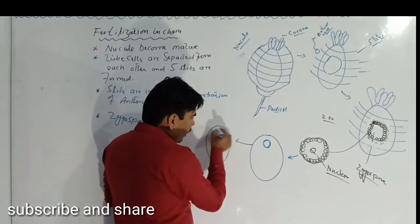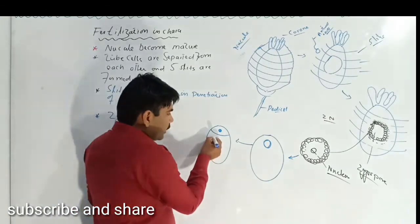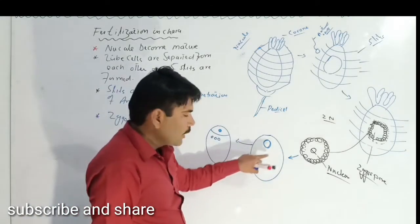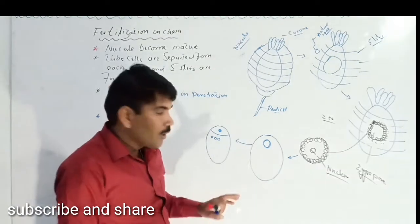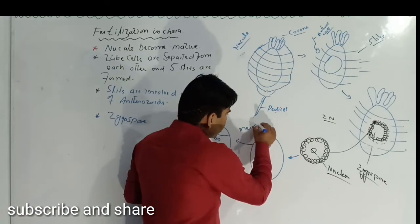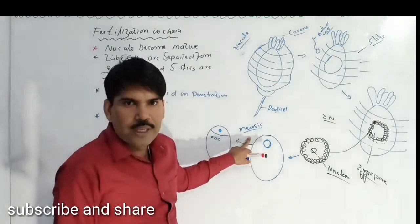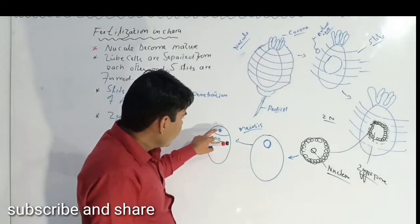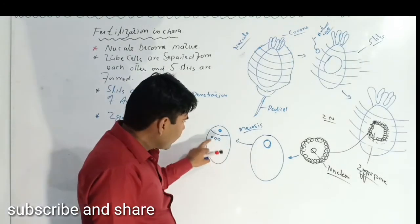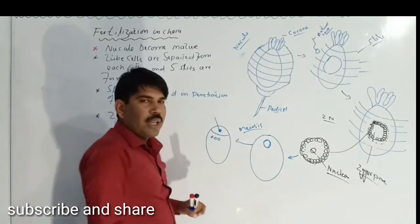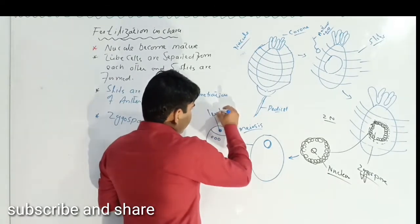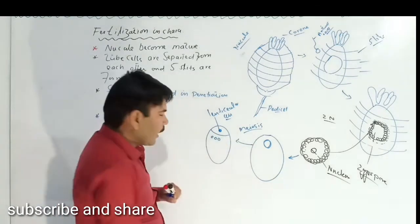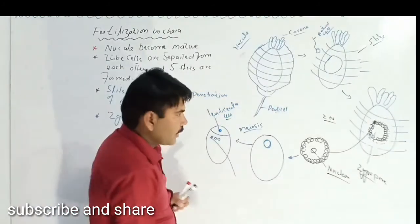The upper or apical cell is smaller in size, but the lower cell is larger in size. This division is meiosis. As a result of meiosis, four nuclei are produced. One nucleus is present at the apical region and three nuclei are present in the lower region. This apical nucleus is known as the lenticular cell.